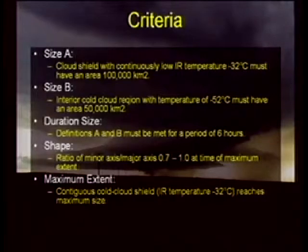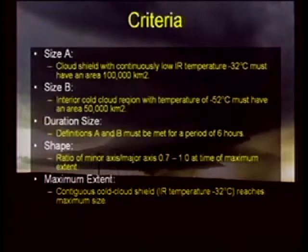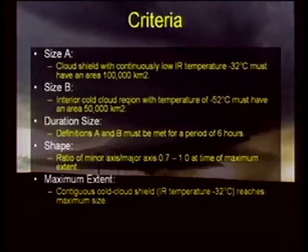The shape of an MCC suggests that the ratio of the minor axis to the major axis has to be 0.7 to 1 at the time of maximum extent. Basically, it means these things have to be almost circular in size. The maximum extent is the area that the cold cloud region — those minus 32 degrees — reaches.